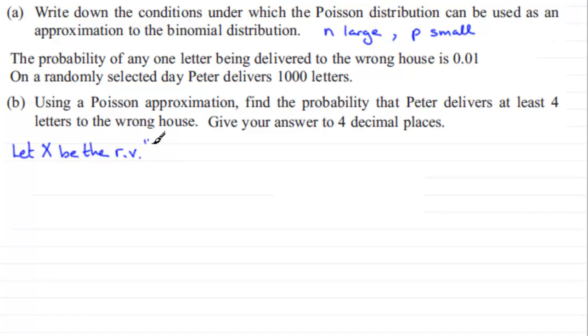And that random variable is going to be essentially the number of letters that are delivered to the wrong address. So we'll just say delivered to the wrong address. I'll just put wrong address, cut down on the words a bit. But we need to define that random variable.